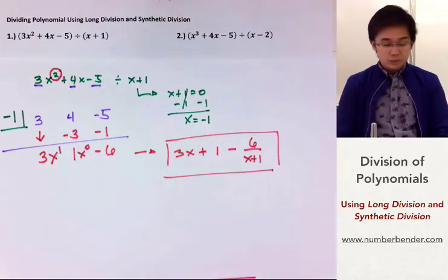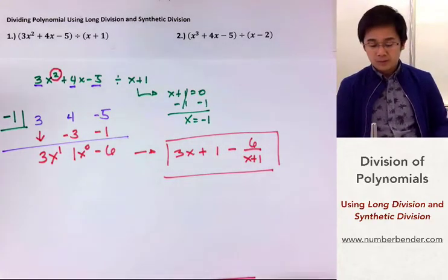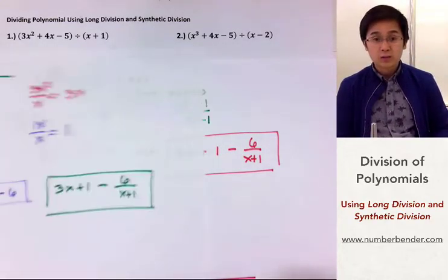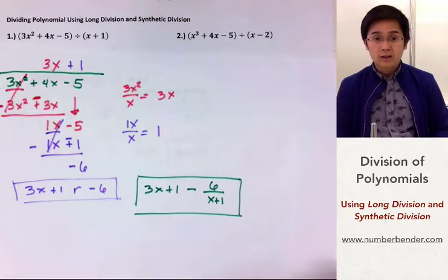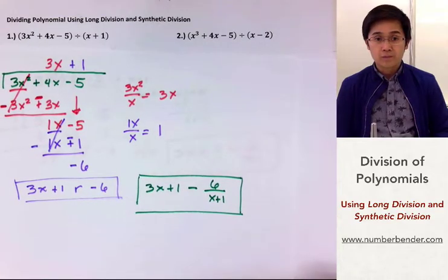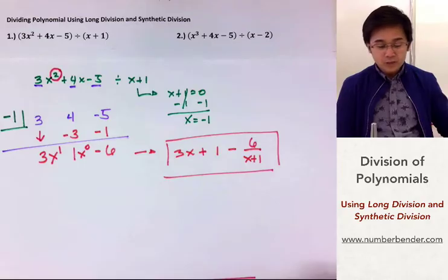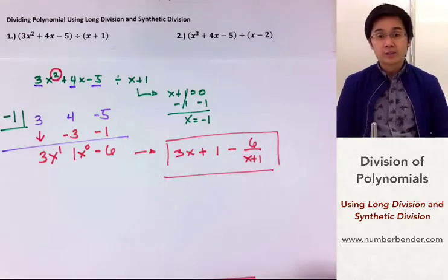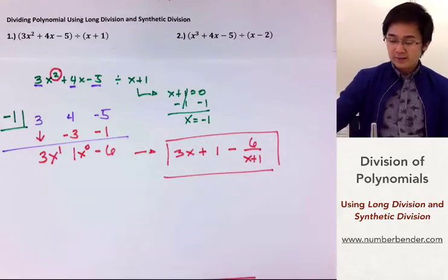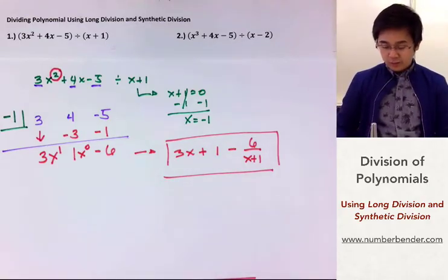To write out our polynomial in standard form, this becomes 3x plus 1 with a remainder of negative 6 all over x plus 1 — the same result we got using long division. So both long division and synthetic division give the same answer.